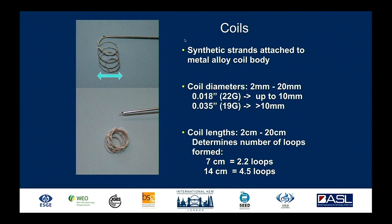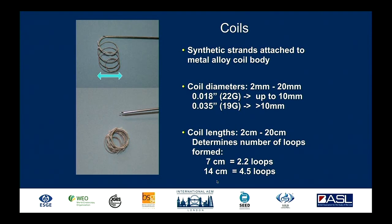A few words about these coils: they are synthetic strands attached to a metal alloy coil body, coming in diameters of 2 mm to 20 mm. You select the coil diameter based on your measurement of the varix size. Through a 22-gauge needle you can place coils on a .018-inch guide wire, up to 10 mm diameter. If the varix is larger than 10 mm, you'll need a 19-gauge needle with a .035-inch wire. Coil lengths vary from 2 cm to 20 cm; I typically use a 7 cm length coil giving 2.2 loops, or 14 cm for 4.5 loops.